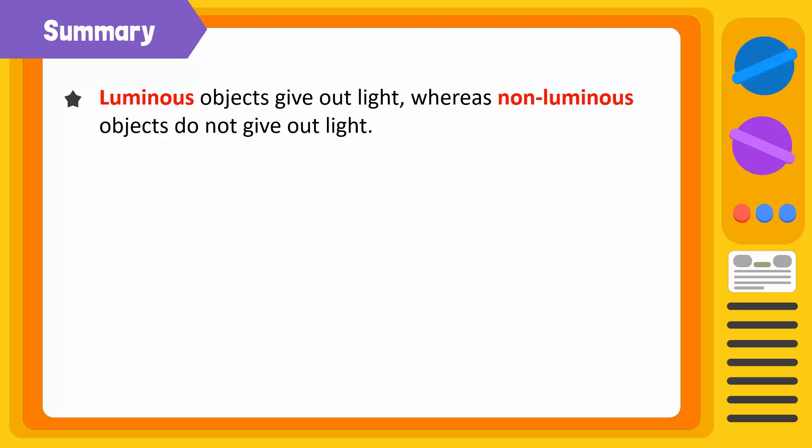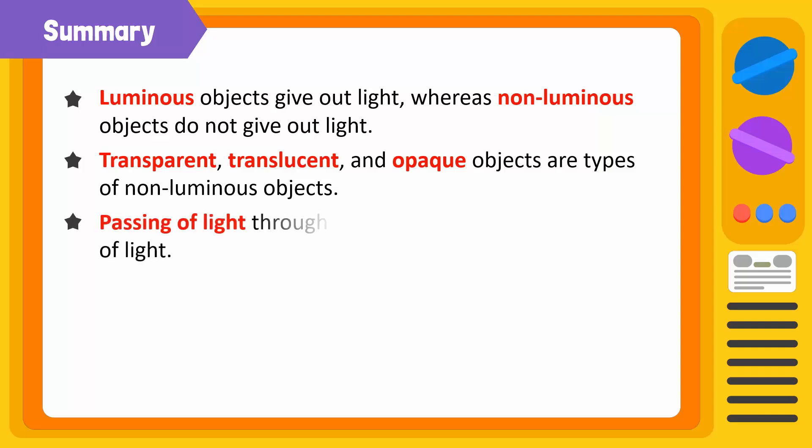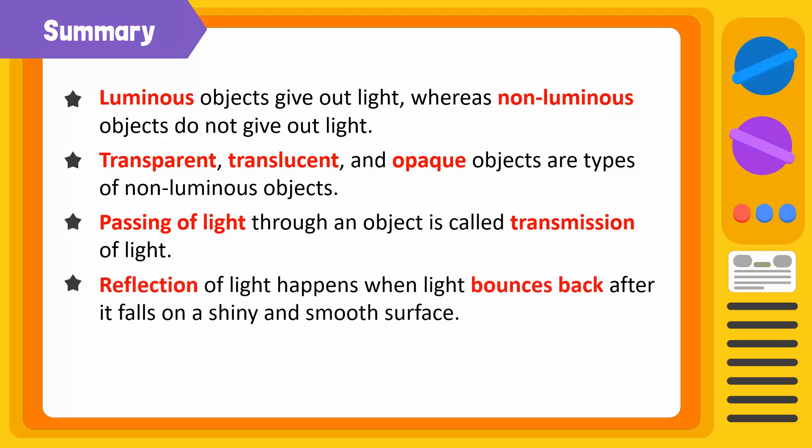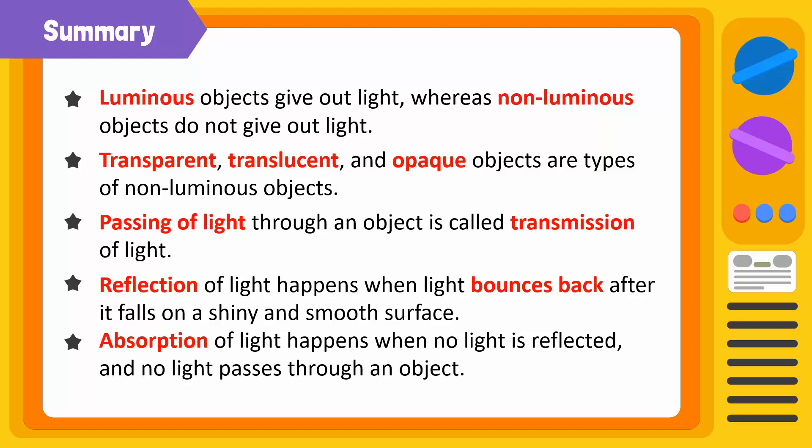Time to summarize. Objects that give out light are called luminous, while those that cannot give out light are called non-luminous objects. Non-luminous objects can be transparent, translucent, or opaque. The phenomenon of passing of light through an object as it falls onto it is called transmission of light. When light falls onto a shiny and smooth surface, it bounces back. This is called reflection of light. Absorption of light happens when no light is reflected and no light passes through an object.